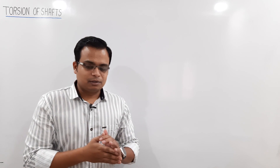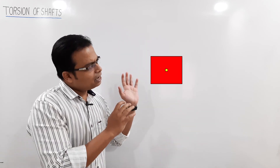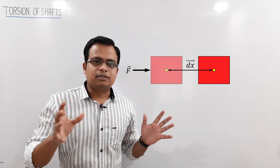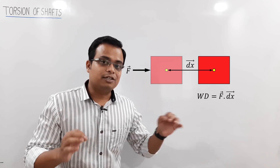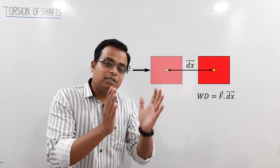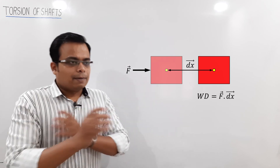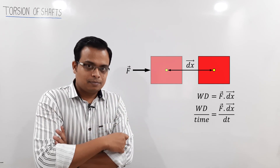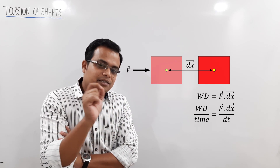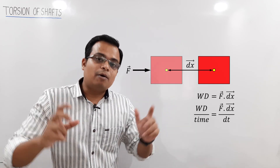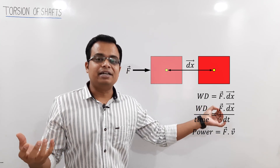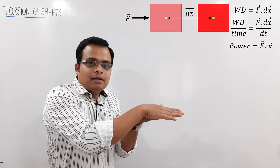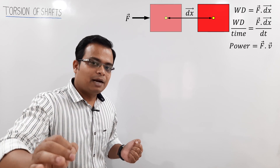In elementary terms: apply a constant force on a block that displaces by a small amount dx. The work done is F·dx, a dot product since both are vectors. Work done per unit time — dividing both sides by dt — gives power = F·(dx/dt) = F·v. So for an object moving in a straight line, power equals force multiplied by instantaneous velocity.